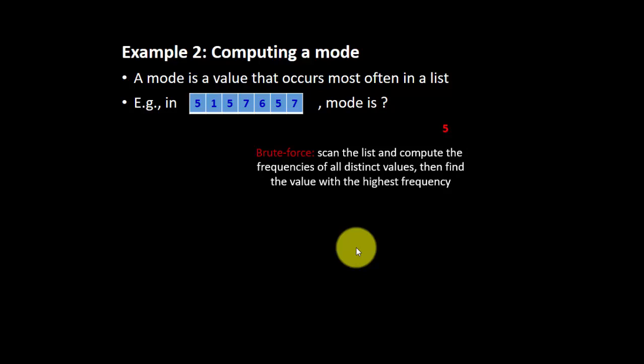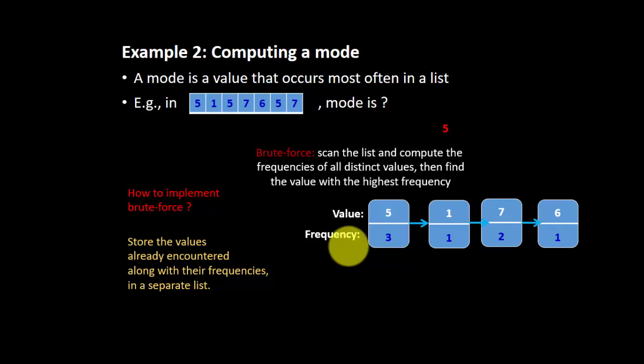What is your brute force idea to solve this? We can scan the list and compute the frequencies of all distinct values. So, how to improve, how to implement the brute force? We store the values that already counted along with the frequencies in a separate list.